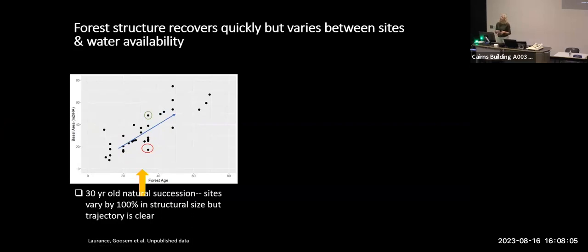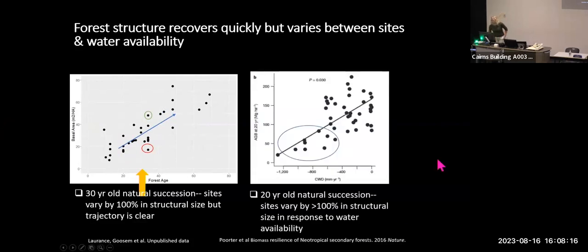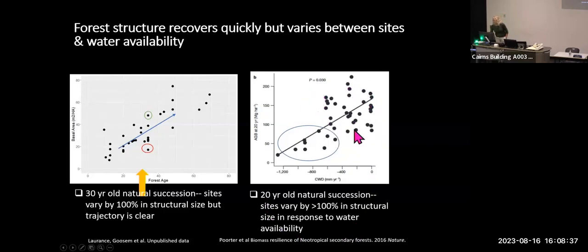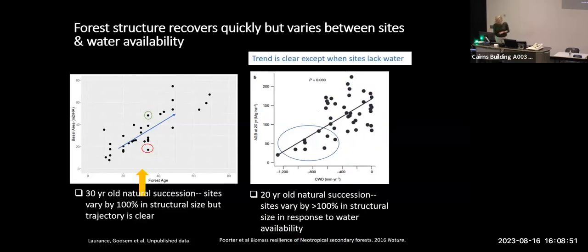Essentially, not surprisingly, as trees grow they get bigger, and all sites with growing trees do get bigger with time - a very clear trajectory. Comparing with work by Lawrence Porter in neotropical forests using above-ground biomass of 20-year forest sites, we again find sites accumulating biomass, except for sites showing a deficit in water. So soil water availability is really important to how fast forests grow.